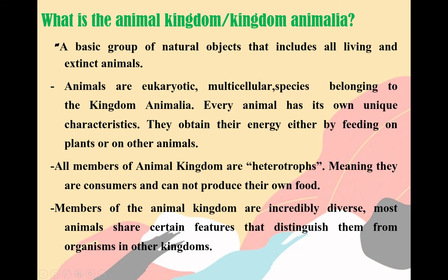So what is Animal Kingdom? Animal Kingdom or Kingdom Animalia is a basic group of natural objects that includes all living and extinct animals. Animals are eukaryotic, multicellular species belonging to the Kingdom Animalia. Every animal has its own unique characteristics. They obtain their energy either by feeding on plants or on other animals. That's why every animal plays an important role in the ecosystem, because some animals help to bring out the nutrients from the cycle.